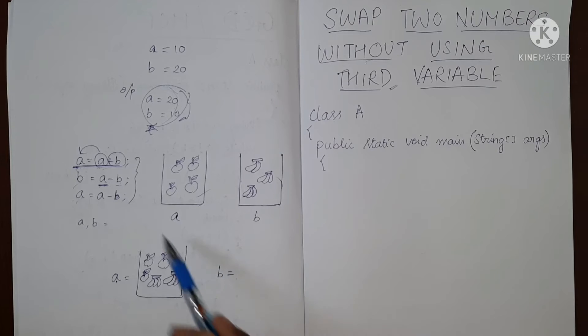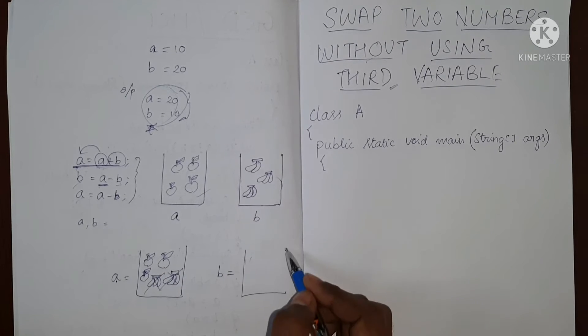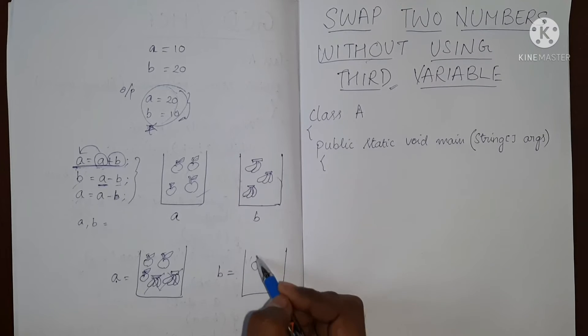From this a, we are going to remove b. So what is b? B is bananas. So we are going to remove the bananas. So what is left is our b. So our b will be apples.